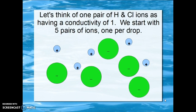Let's think of one pair of H and Cl ions as having a conductivity of one. And let's start with five pairs of ions. Let's say we've got one per drop that we're adding. So we've got five chlorides and five hydrogen ions initially. This is of course just a kind of model to make things a little easier to think about.